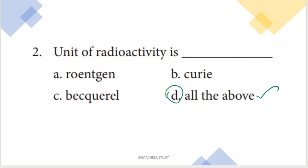Next question: unit of radioactivity. Radioactivity has different units — Rutherford, Curie, and Becquerel. All of these are units of radioactivity. So the answer is option D, all of the above.